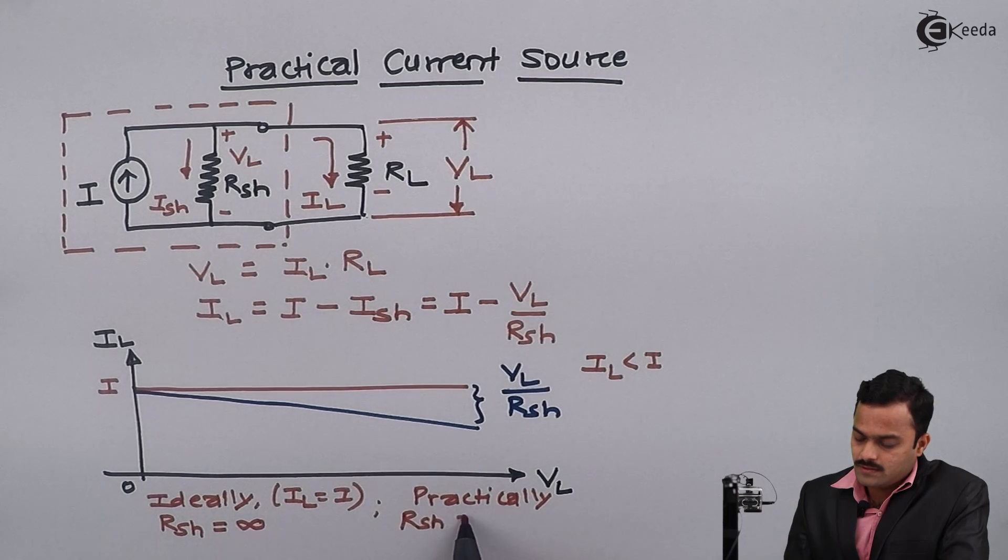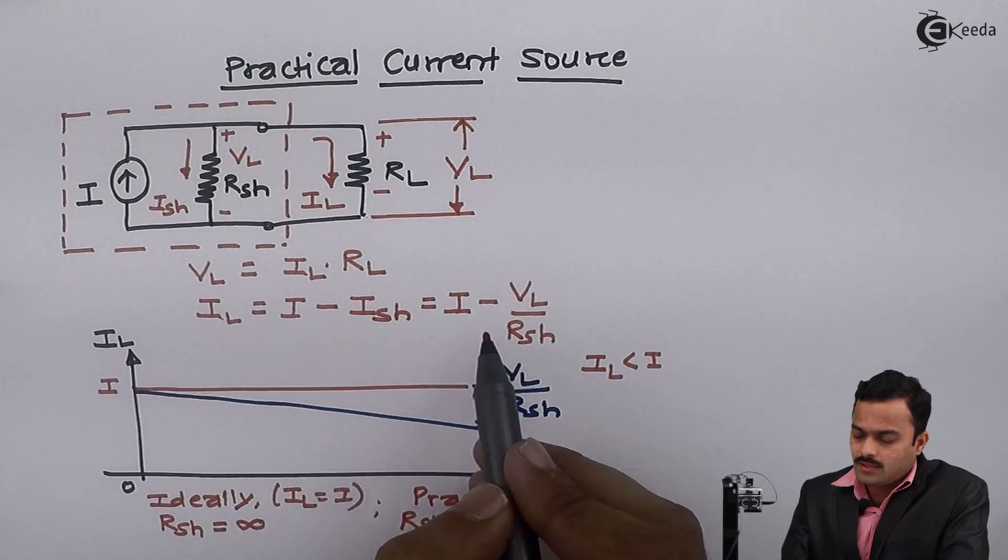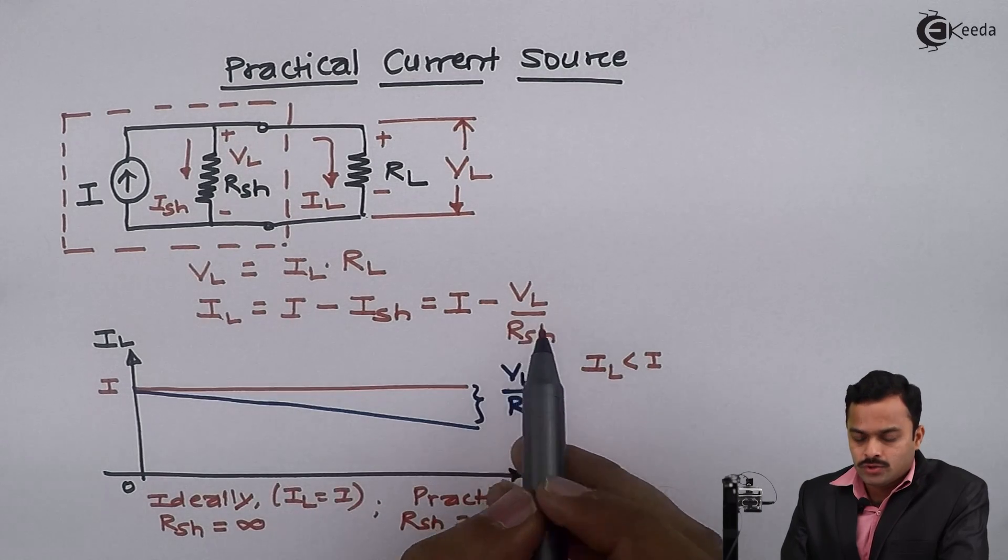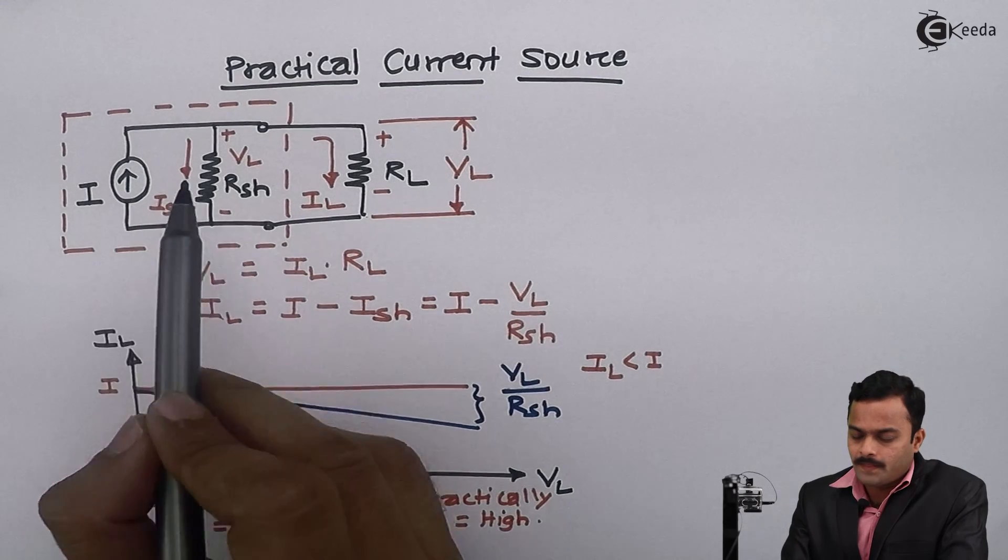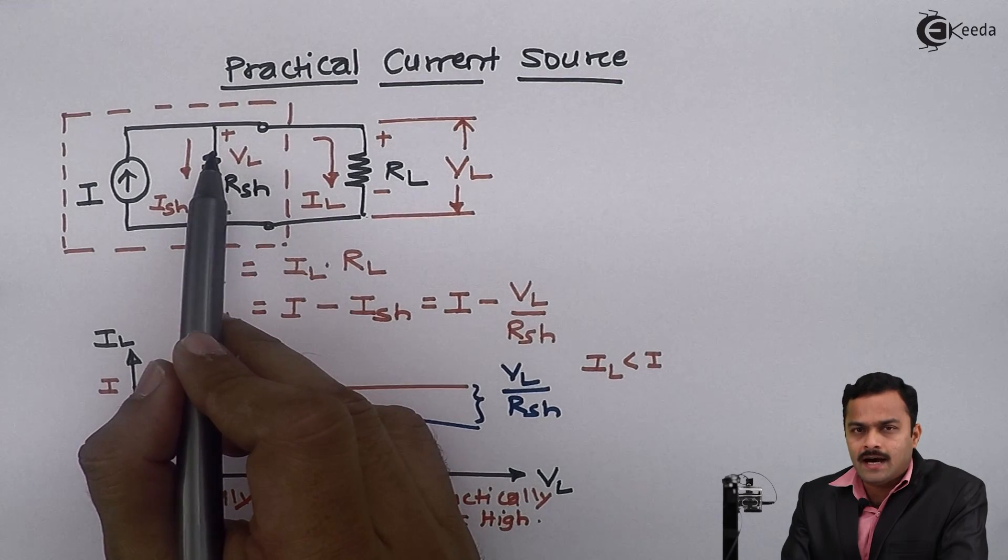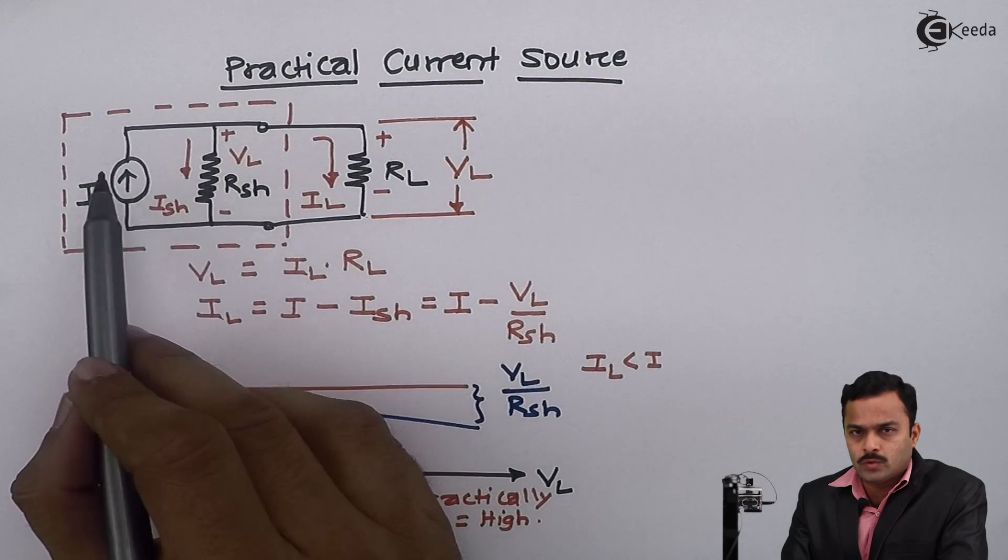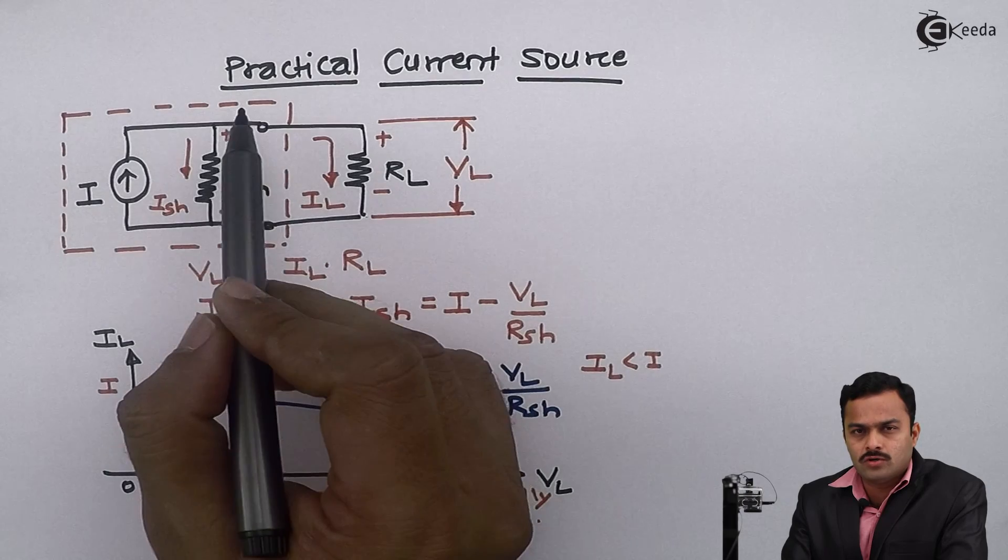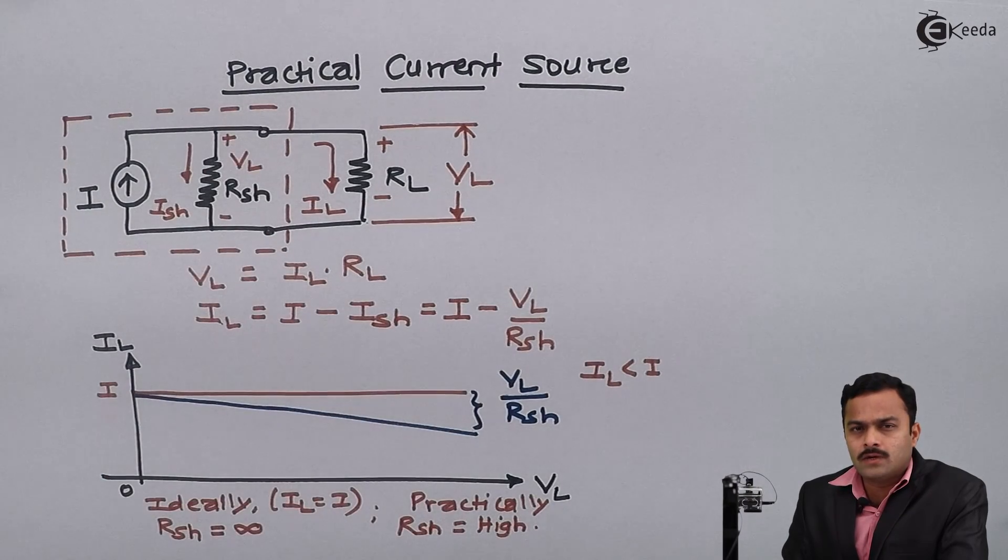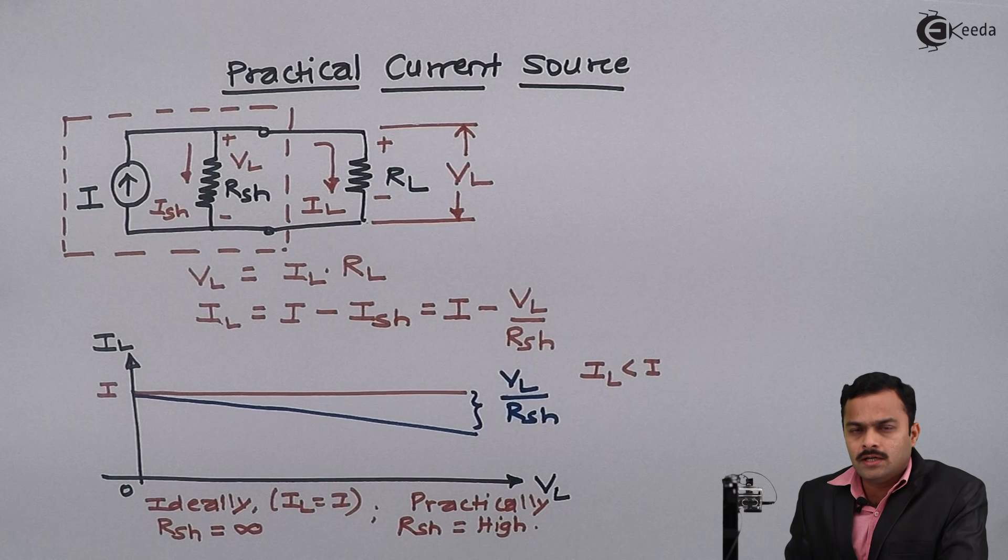Rsh should be as high as possible so that I will get IL close to I. So in this particular video we have seen that the practical current source will have the current value along with a very large resistance connected in parallel to it. So henceforth we are going to consider this practical current source and we are going to convert that into equivalent voltage source in order to solve a problem. Thank you.